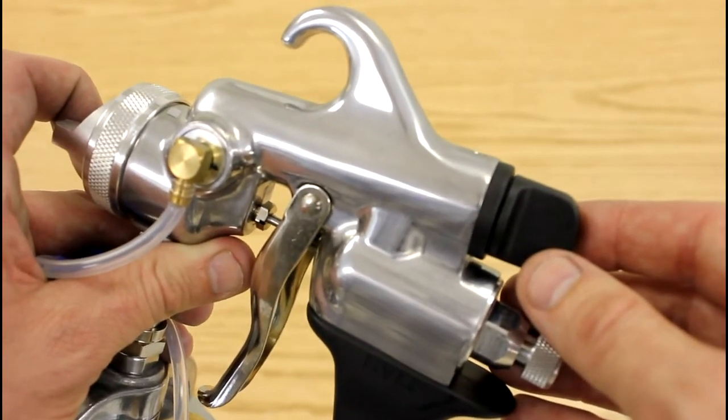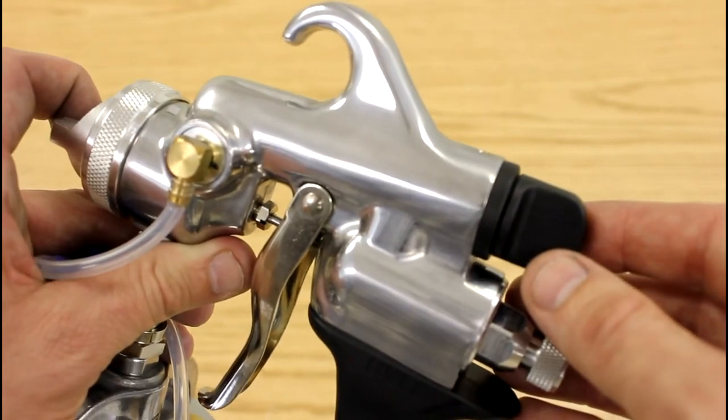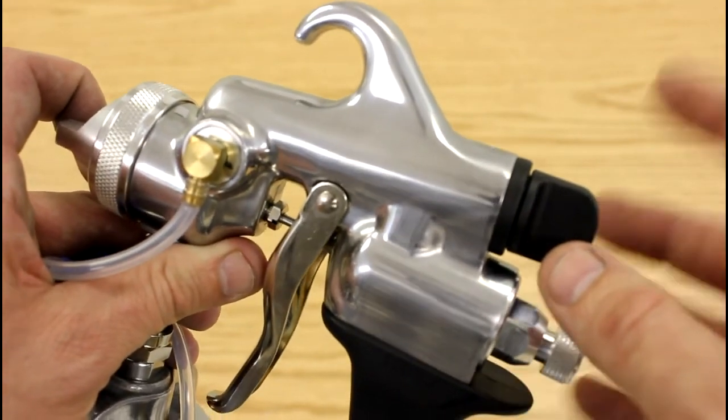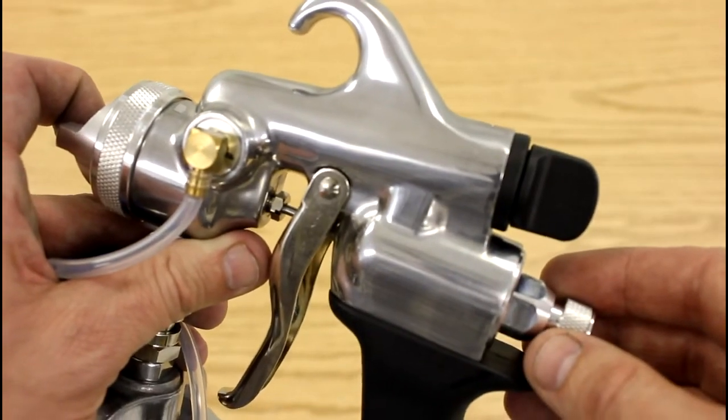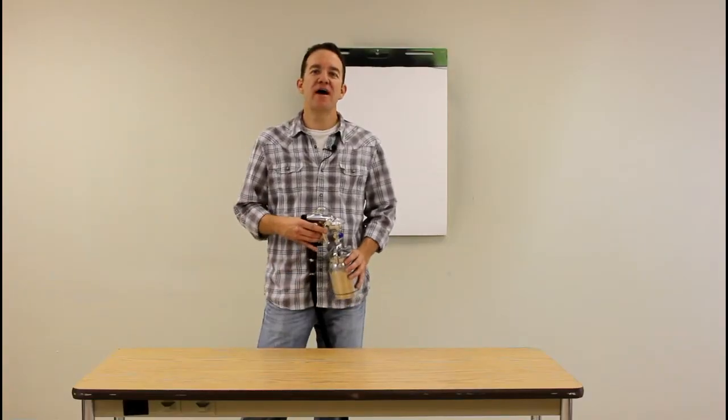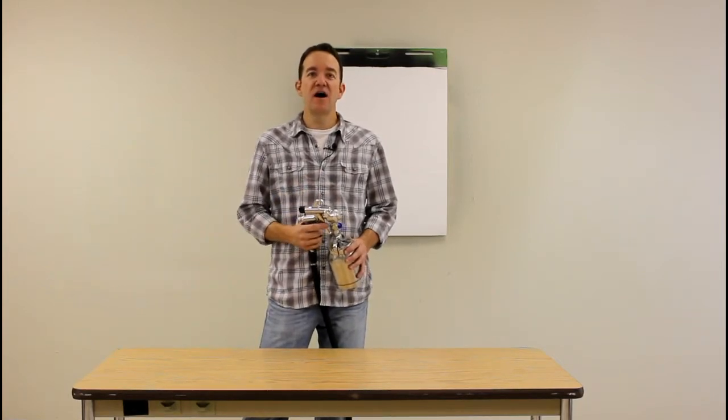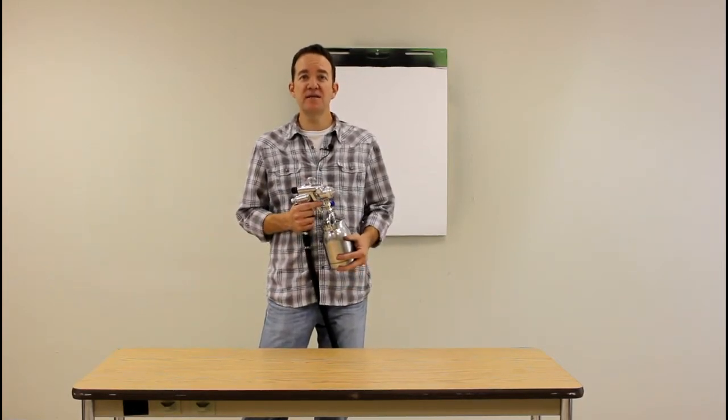So let's go ahead and we'll do a little spray out demonstration and see what all these knobs do when there's some paint in the gun. Okay, now that we've seen some of the basic functions on the gun itself I've gone ahead and loaded up some paint in the cup.